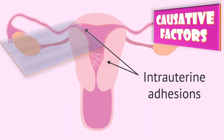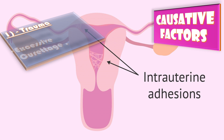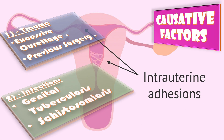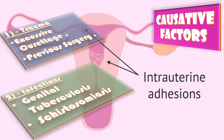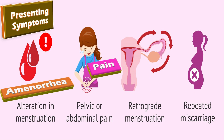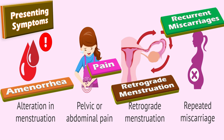The causative factors include, first, trauma as a result of excessive curettage at the time of D&C and previous surgery like caesarean section, polypectomy, or myomectomy. The second cause is infection, which may be genital tuberculosis or schistosomiasis. The presenting symptoms include amenorrhea and pain due to trapped blood, retrograde menstruation, recurrent miscarriages, and infertility.